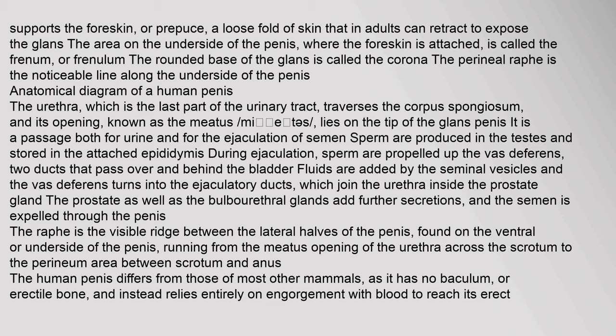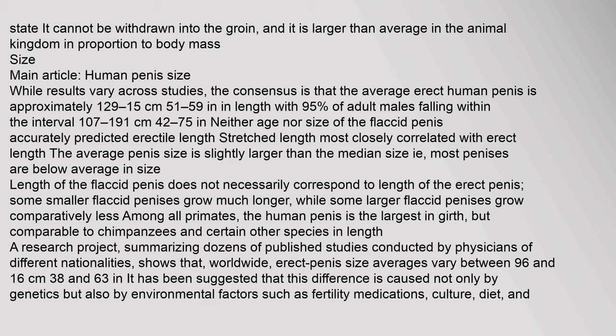During ejaculation, sperm are propelled up the vas deferens — two ducts that pass over and behind the bladder. Fluids are added by the seminal vesicles, and the vas deferens turns into the ejaculatory ducts which join the urethra inside the prostate gland. The prostate as well as the bulbourethral glands add further secretions, and the semen is expelled through the penis. The human penis differs from those of most other mammals as it has no baculum or erectile bone and instead relies entirely on engorgement with blood to reach its erect state.